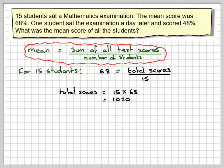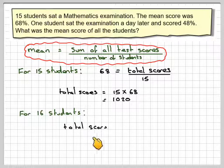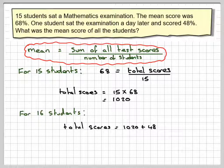So the total scores, then on the next day, the 16th person sits the exam. So if I add 48 to that, the total scores will be equal to 1020 plus 48, which gives me 1068.